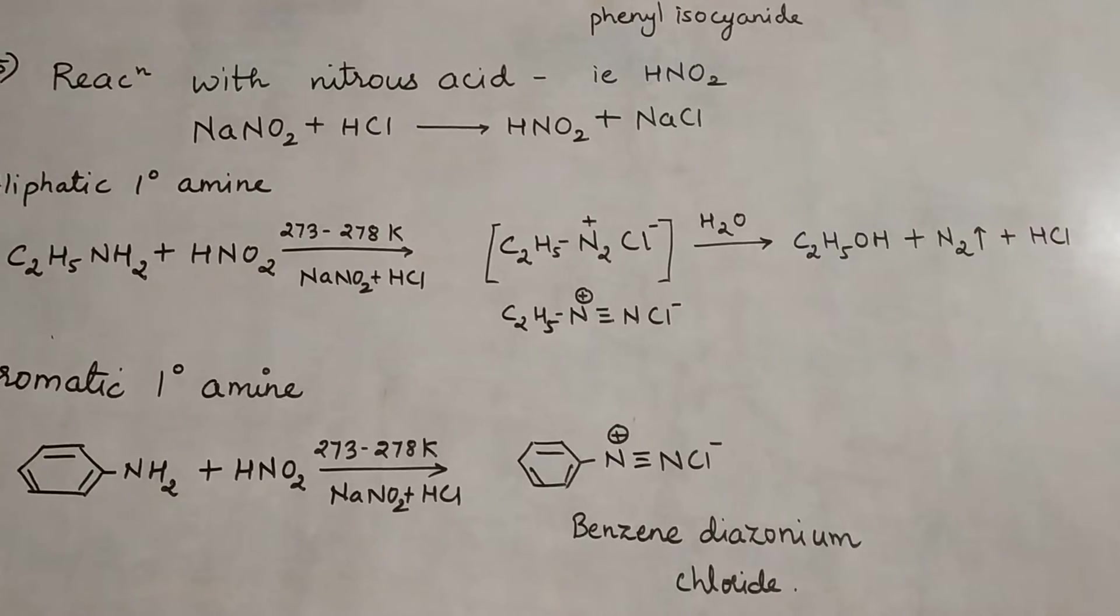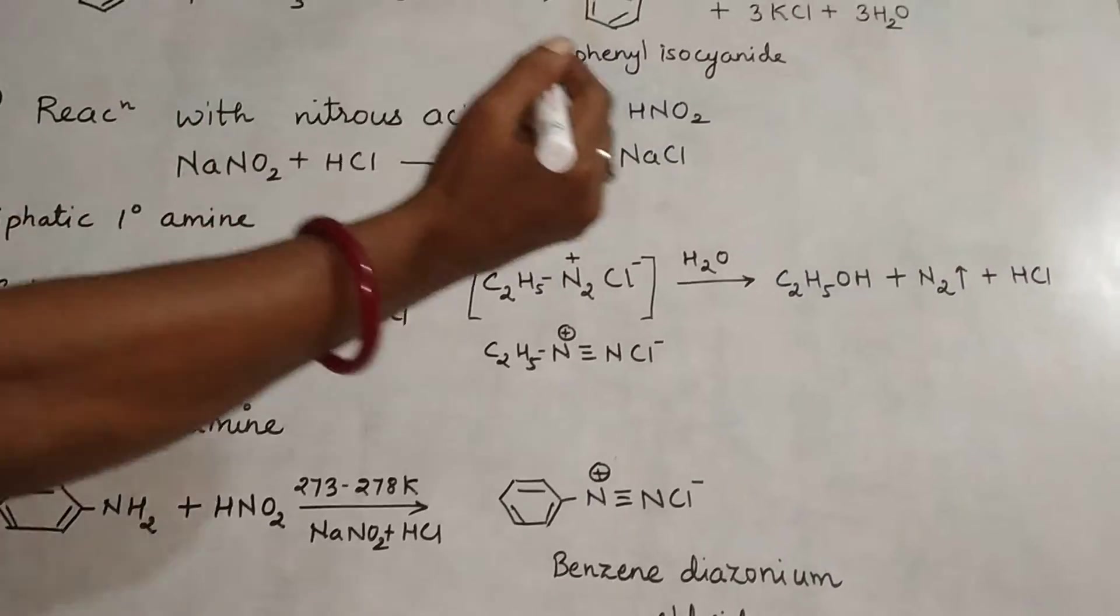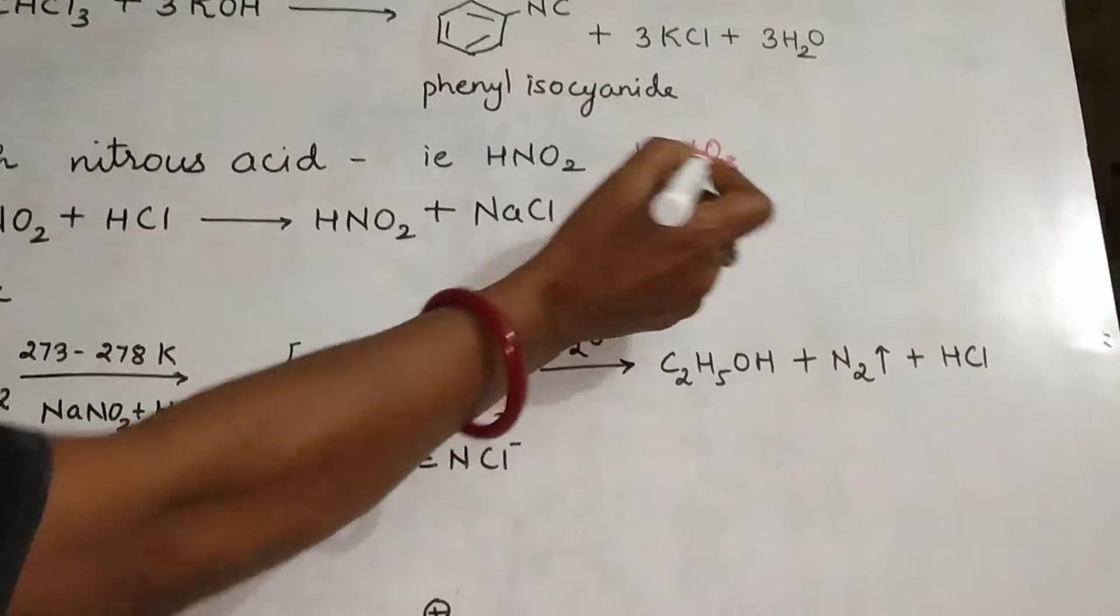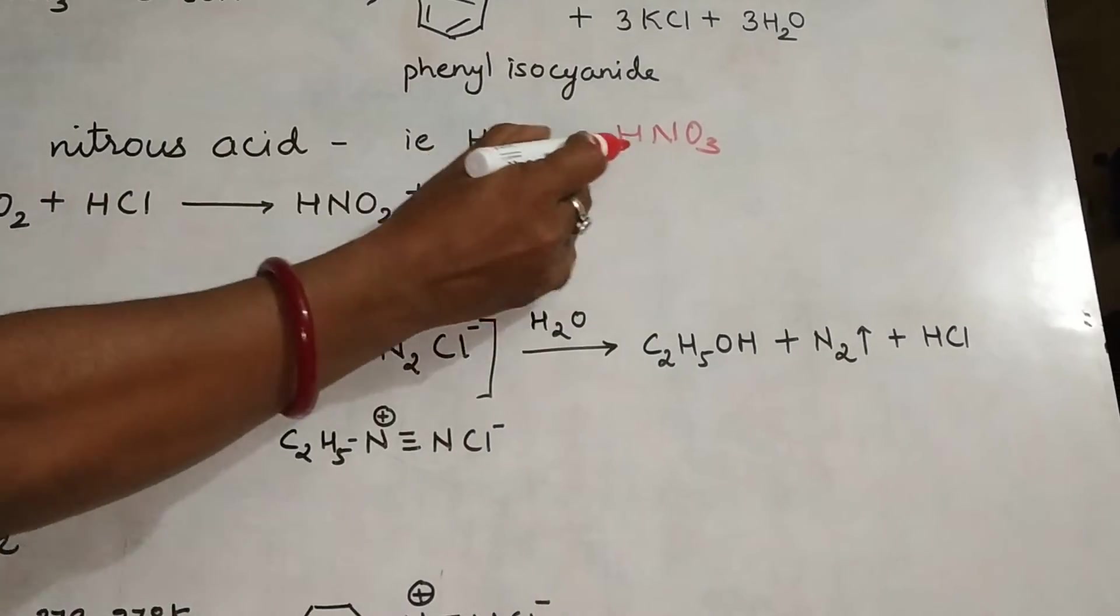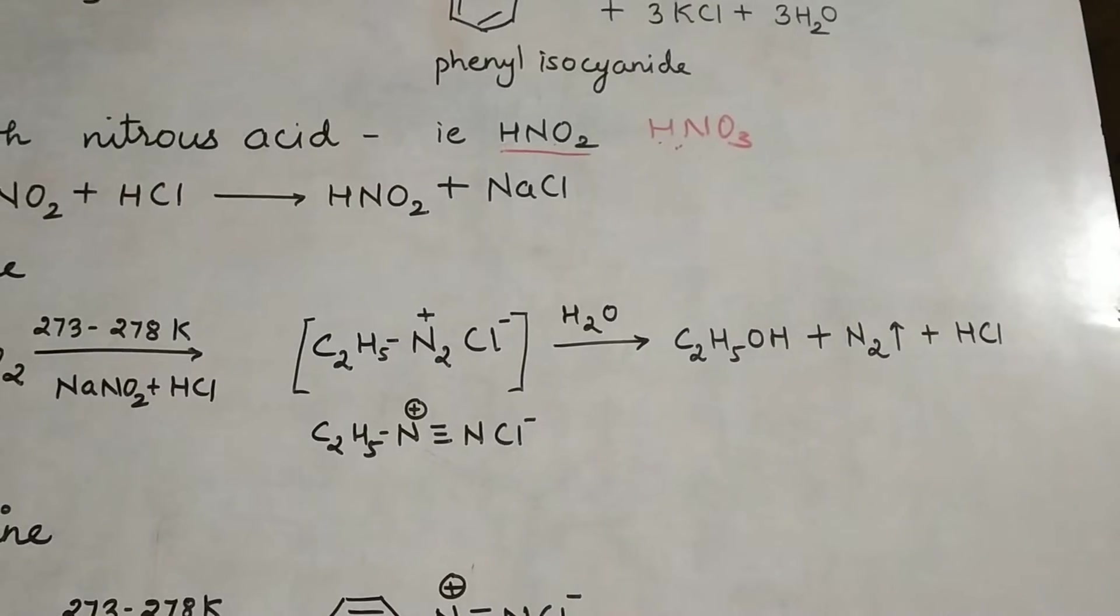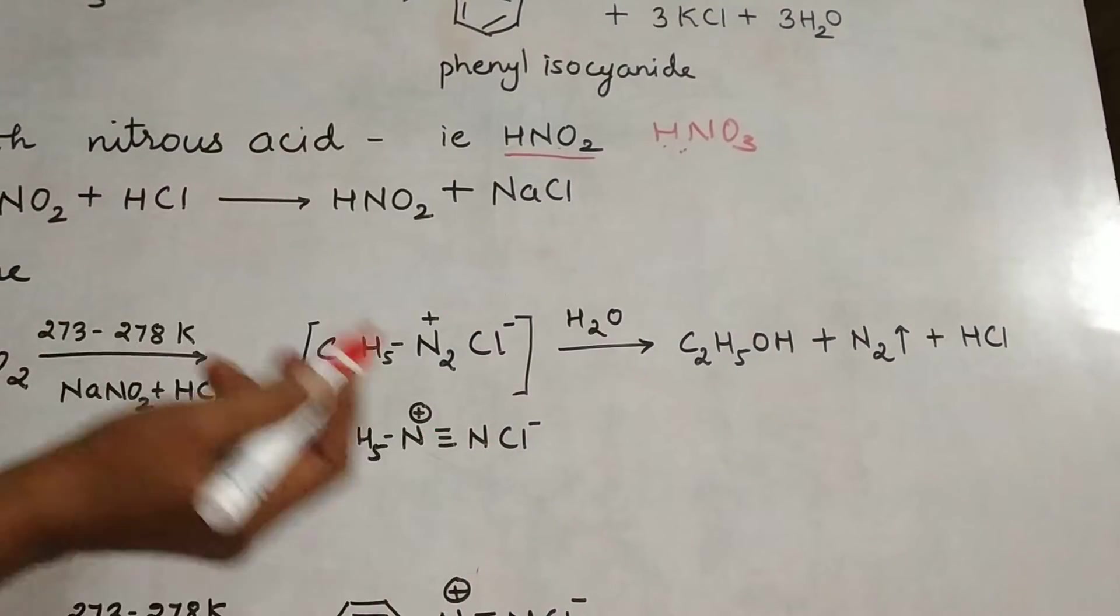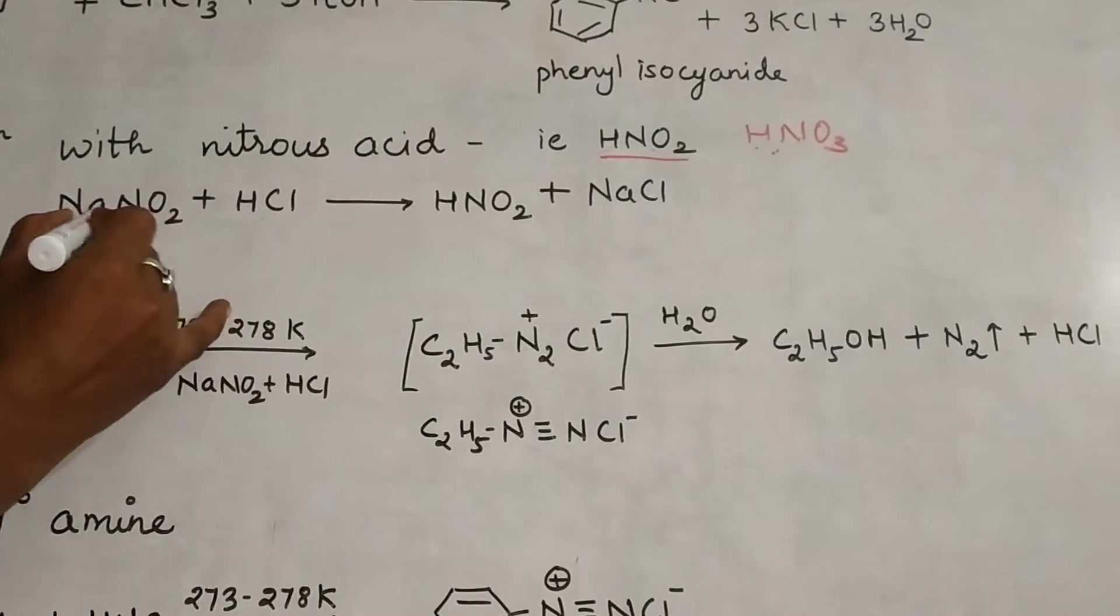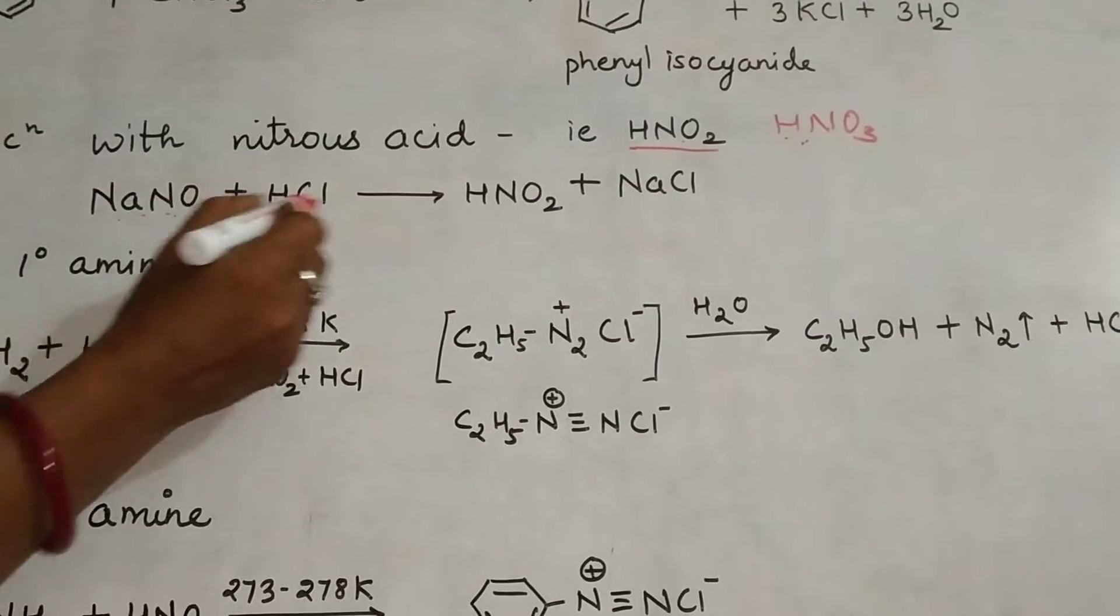We've studied nitric acid, HNO3. This is nitrous acid, HNO2. What's the difference? Nitric acid is readily available in the lab, but HNO2 is prepared by treating sodium nitrite (NaNO2) with HCl. This reaction forms HNO2 and NaCl.